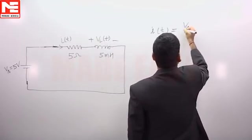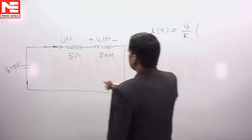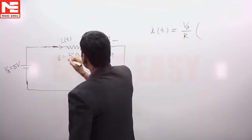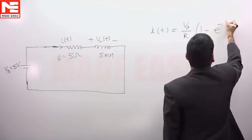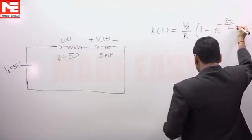So it is Vs by R, suppose it is R, then Vs by R times 1 minus e to the power minus Rt by L into u(t) ampere.